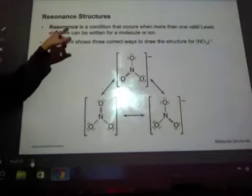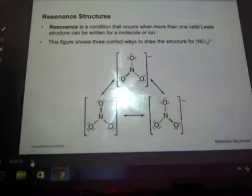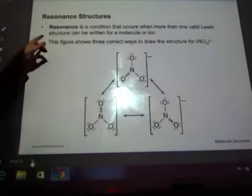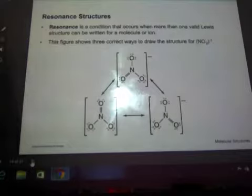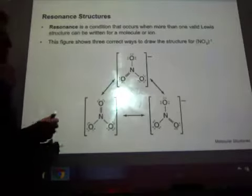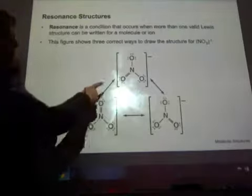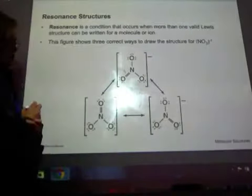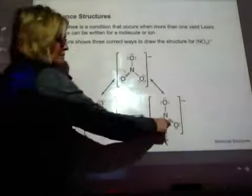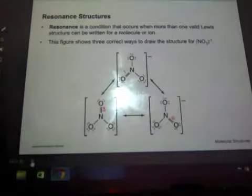Resonance structure. Resonance is a condition that occurs when there's more than one Lewis structure you can draw. If you're going to have a resonance structure, you're probably going to have a multiple bond in it, so a double bond or a triple bond. So if I look at nitrate, I'm going to have 3 points where it has bonds. My double bond can go here, so that's structure 1. My double bond can go here, that's structure 2. Or the double bond can go up there, that's structure 3.